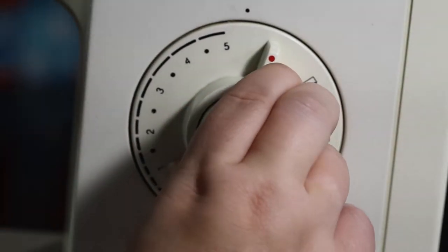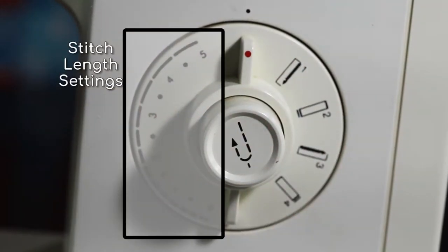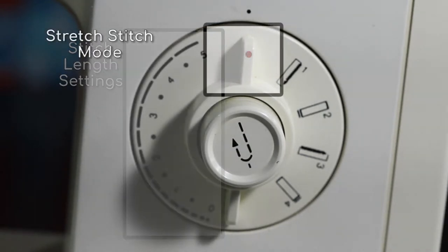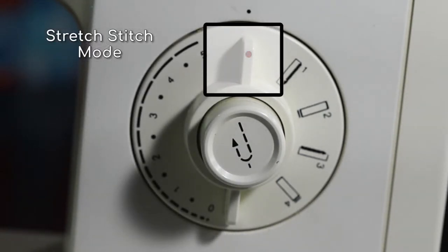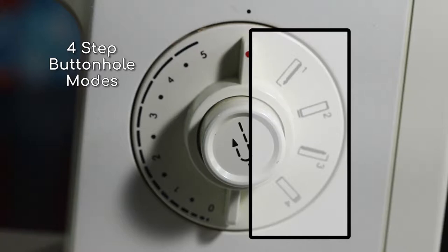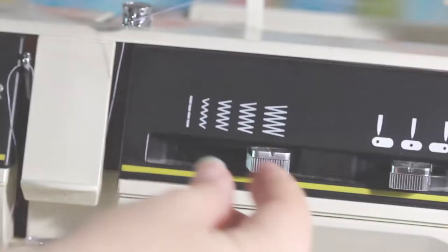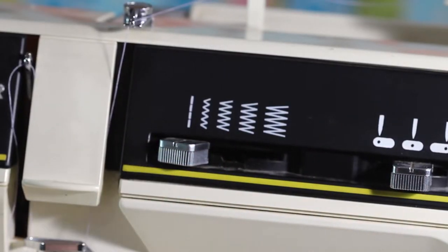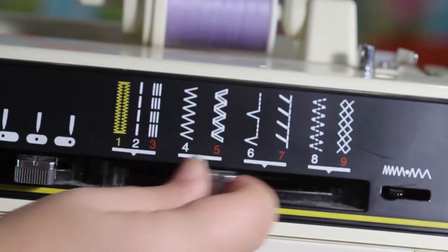Here is the length dial. In addition to adjusting stitch length, you can also set a stretch stitch or 4 step buttonhole. Use this lever here to adjust the stitch width. Use this lever to adjust the stitch pattern.